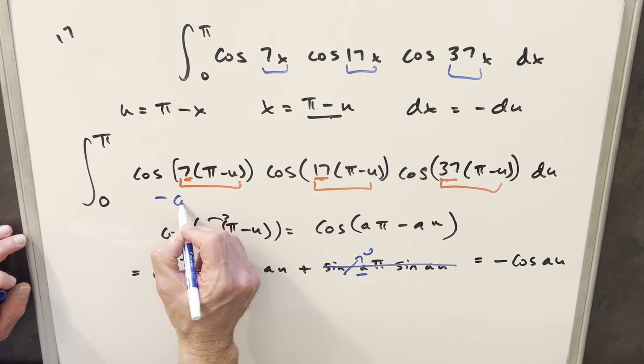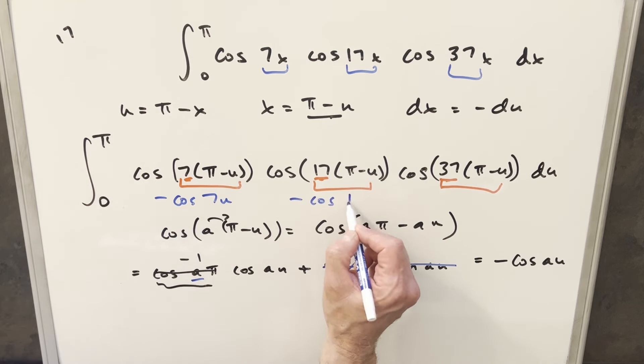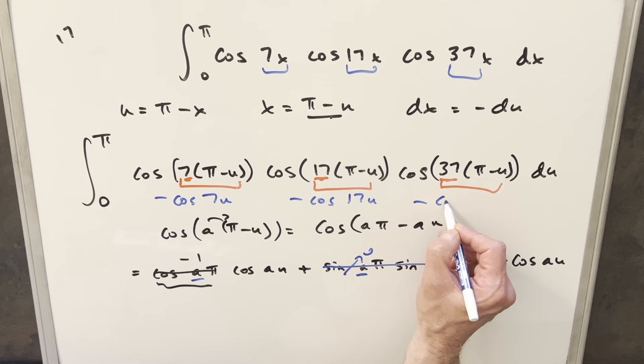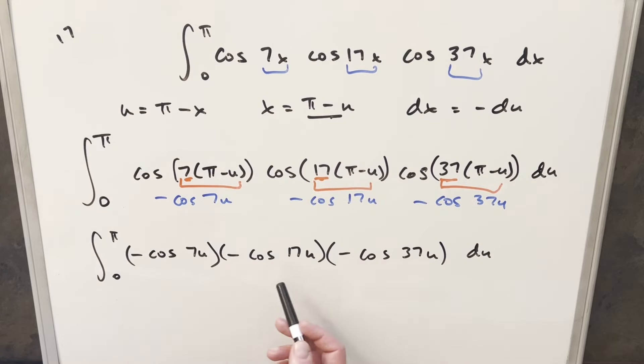So what we can do for each of these expressions, I can write this one as minus cosine seven u minus cosine 17 u and minus cosine 37 u. But now for simplification, I still want to get rid of some of these minus signs. Well, like if I just here we have minus one times minus one, we multiply those together, I can change those two into a plus.